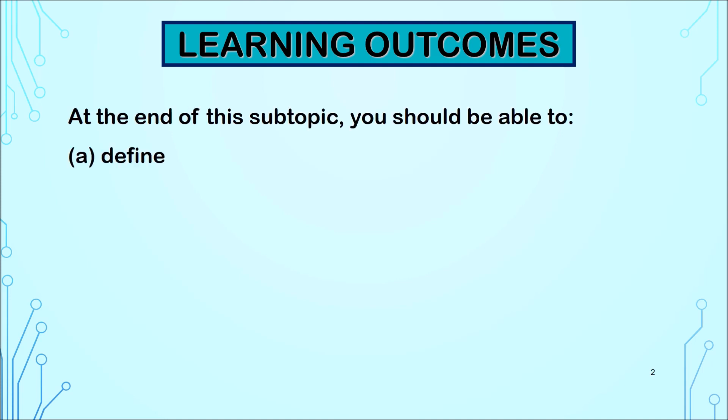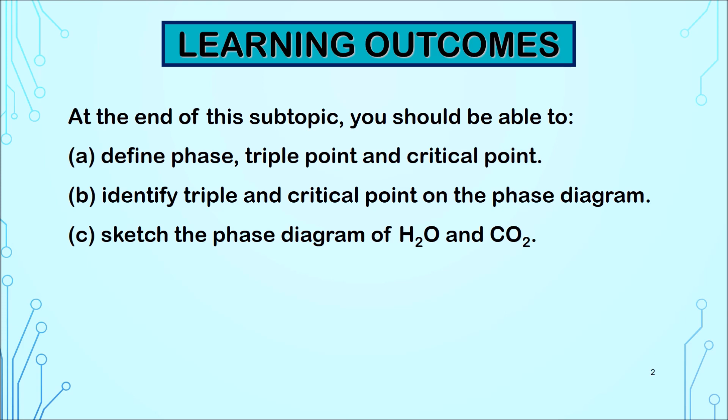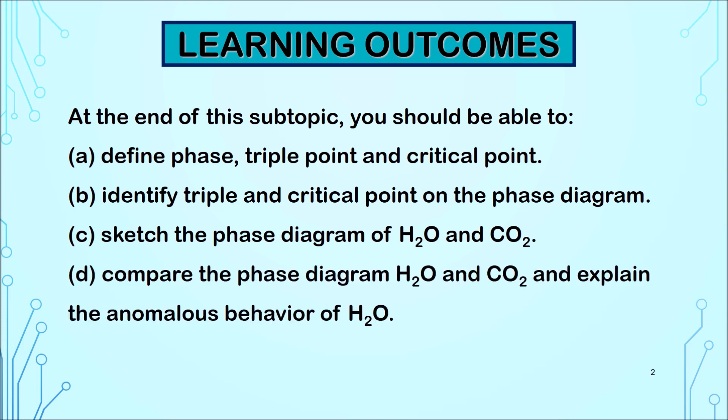Learning outcomes include define phase, triple point and critical point, identify triple and critical point on a phase diagram, sketch the phase diagram of water and carbon dioxide, and finally compare the phase diagram of water and carbon dioxide as well as explain the anomalous behavior of water.